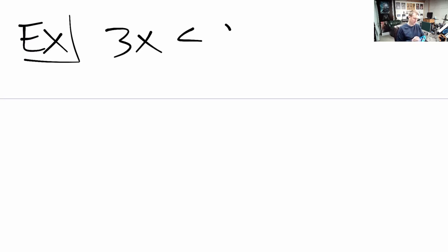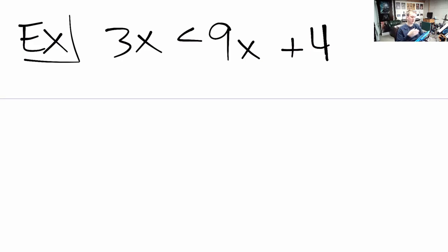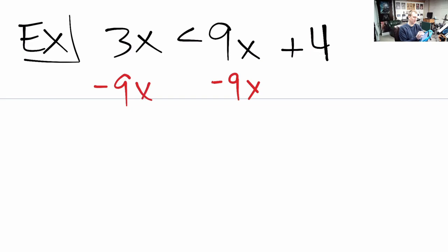Now let's solve a quick linear inequality. Suppose we have 3x is less than 9x plus 4. We can essentially treat this like an equality but with modified rules. The basic idea - isolating the variable - is to get all variables on one side and constants on the other. Subtracting 9x from both sides gives negative 6x is less than 4.